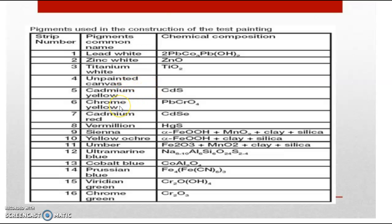Cadmium yellow is CdS; chrome yellow is PbCrO4; cadmium red is CdSe. Vermilion gives a brilliant red or scarlet red and has the composition HgS. Sienna is an earth pigment containing iron oxide, which is yellowish-brown in color. When it undergoes heating, it gives a reddish-brown color, also called burnt sienna.